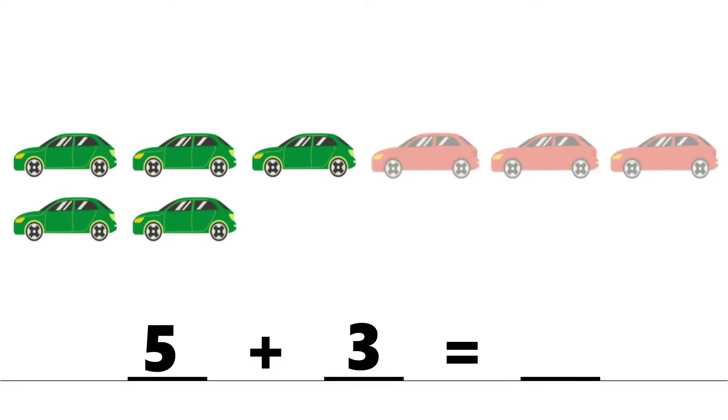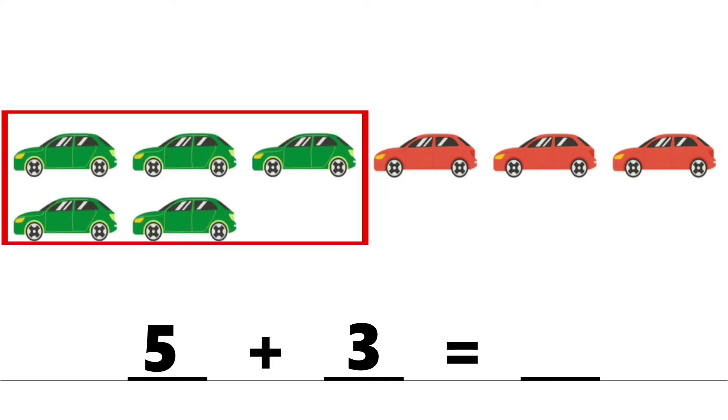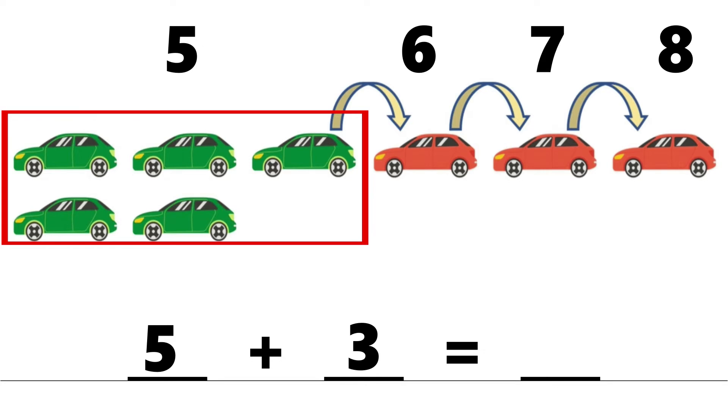5 plus 3. Instead of starting from 1, I already know there are 5 green cars. So let's start from 5 and count on: 5, 6, 7, 8. So 5 plus 3 equals 8.